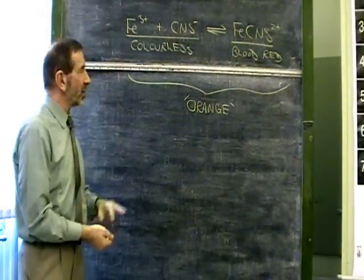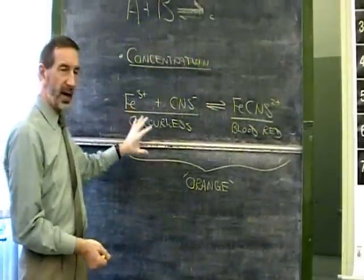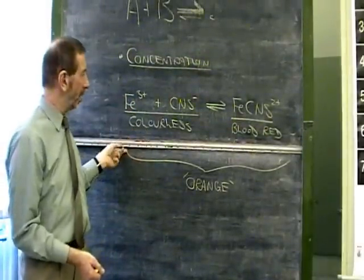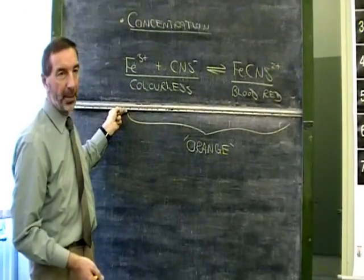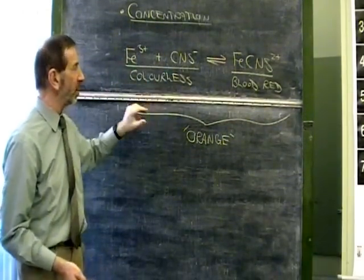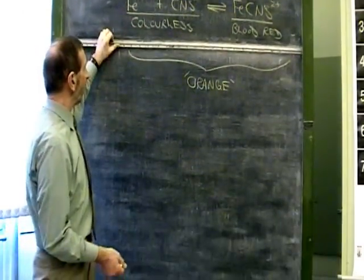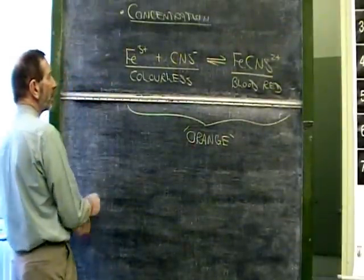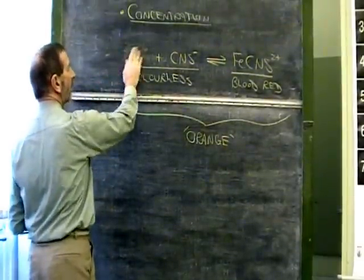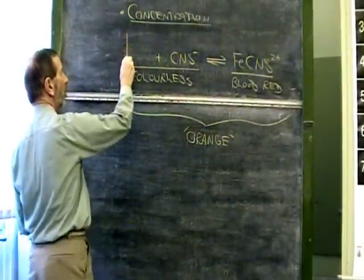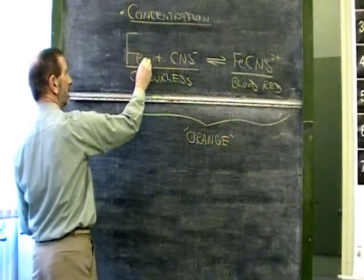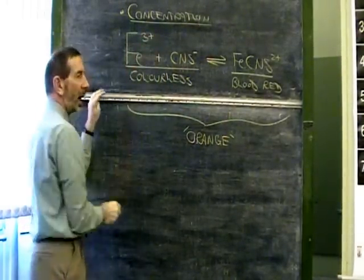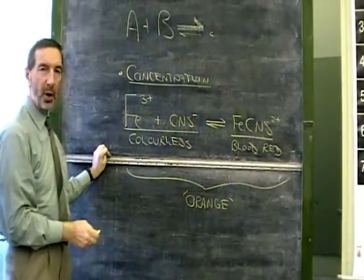If we have this orange situation and we simply left it alone, nothing would happen. But the question is, what would happen if we were to alter the quantities of some of these substances? For example, suppose you were to add more iron 3+. Let's say we came along with more of these ions. How would the system respond? What would happen?